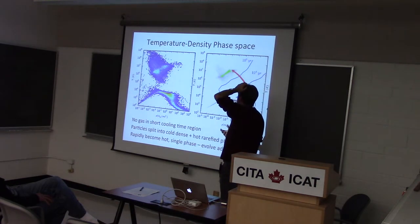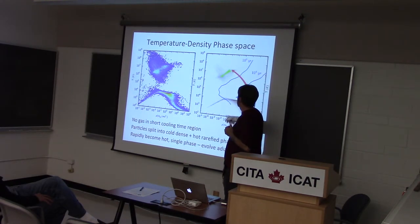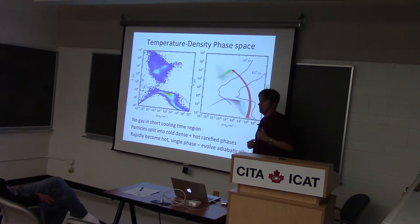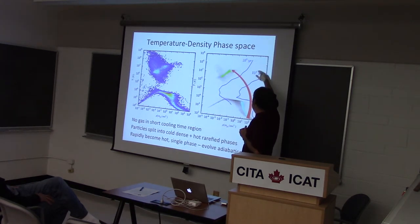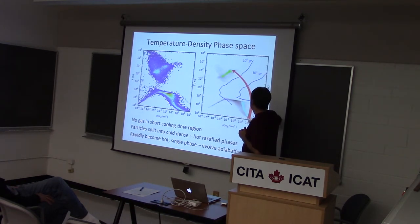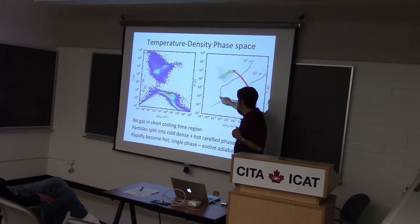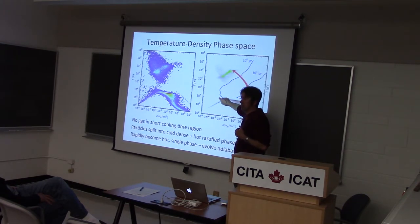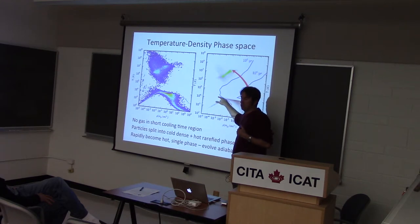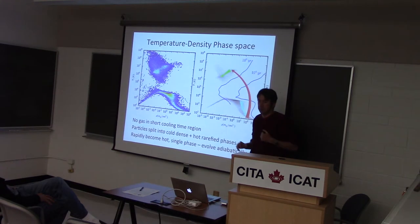This is one of the critical problems with a lot of feedback as done now — it's not good enough to just make hot gas. If you make hot gas at the ISM density, by the time it gets into your halo, it will adiabatically cool to 10,000 K or less. You need to make hot bubbles that are not just hot but also very low density, so the entropy is high enough that when they bubble their way out into the halo, they're still hot. These things get straight up to very low densities and high temperature at the same time.